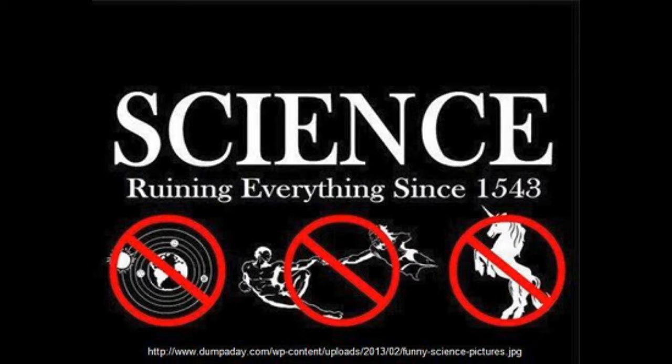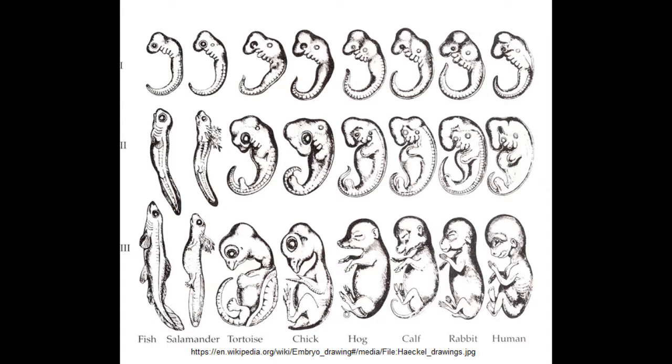The fourth icon is Haeckel's embryo drawings, which purport to show that vertebrates are very similar as early embryos, and therefore this provides evidence for common ancestry.